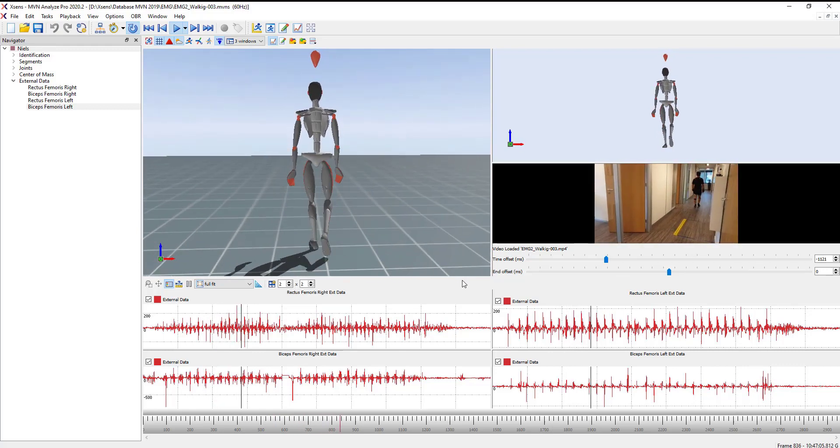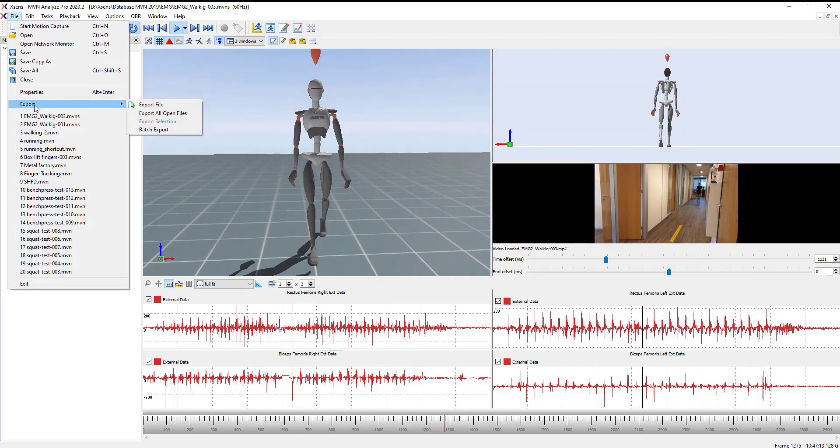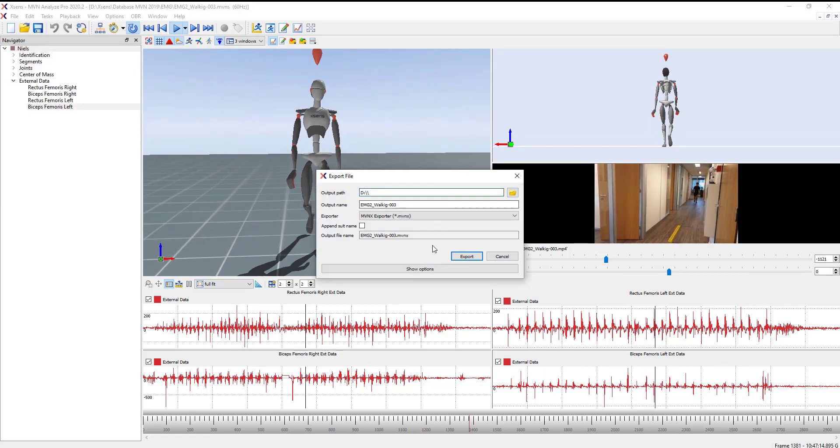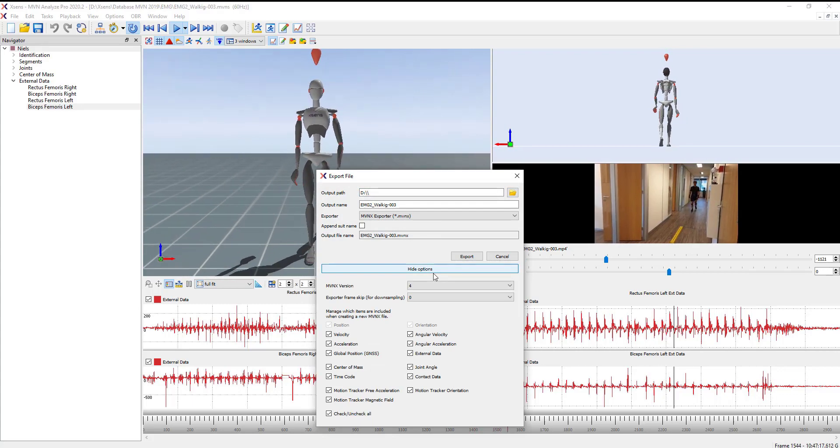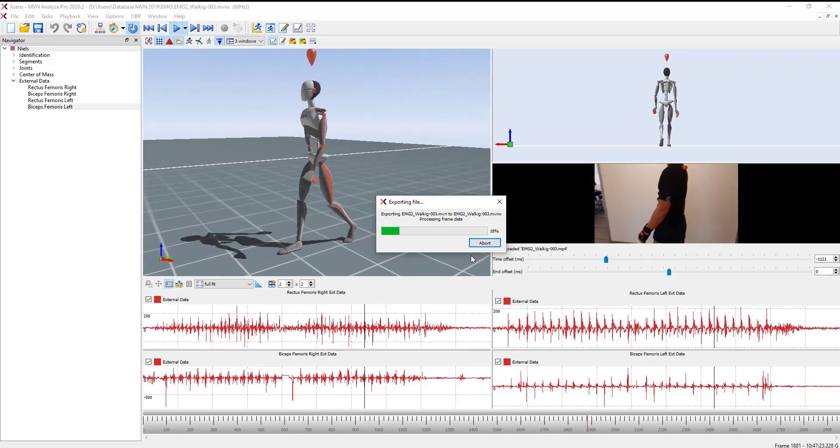With the file opened in MVN Studio and reprocessing finished, export the file in MVNX format. In the scroll down menu, choose MVNX format and in the show options make sure that all the variables of your interest are selected.